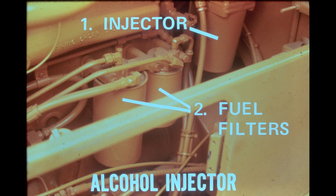Its function is to inject alcohol vapor into the air system to prevent condensation from accumulating and freezing in the brake system. Warm air from the compressor passes through the injector and evaporates small amounts of alcohol. This air-alcohol mixture is then piped into the air system. It's important to keep the injector tank filled with methyl alcohol.